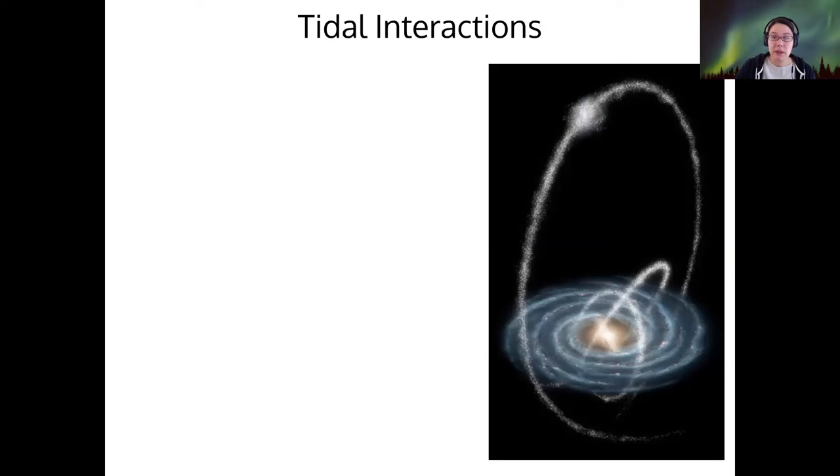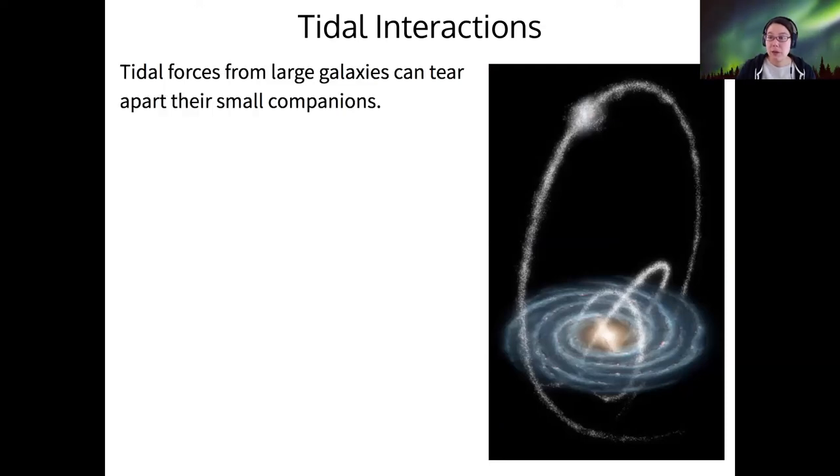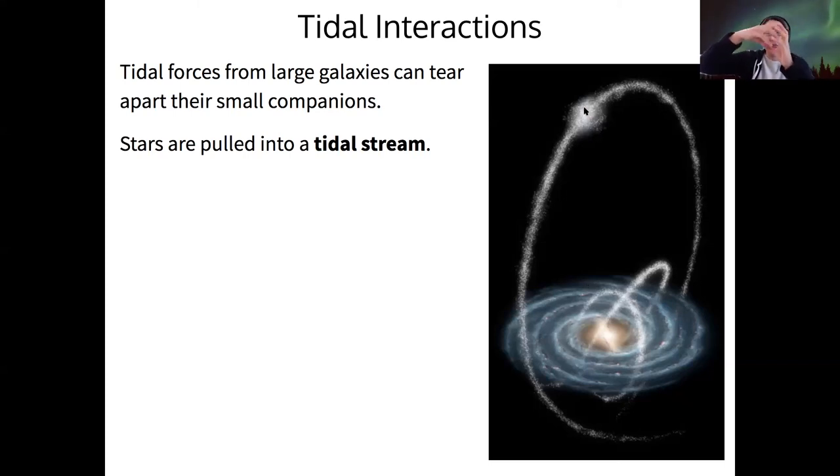So I want to talk about one complication to this tidy model, which is the idea of tidal interactions. So we've discussed tidal forces before. Tidal forces are just the difference in gravity across two sides of a single object that can cause that object to be deformed or torn apart. And there is some evidence, well, actually abundant evidence, that this happens to small dwarf galaxies orbiting large spiral galaxies. And what happens when a dwarf galaxy is tidally pulled apart is that the stars within it become what we call a tidal stream. So some of those stars will end up stretching into an orbit that surrounds the galaxy. And this can happen multiple times with multiple dwarf galaxies and leave behind several tidal streamers, which are persistent over billions of years.